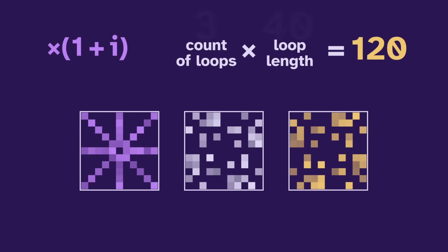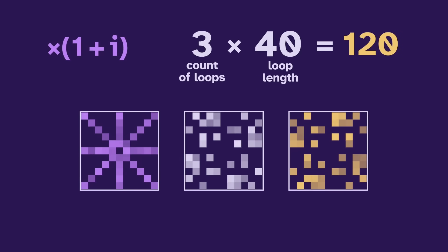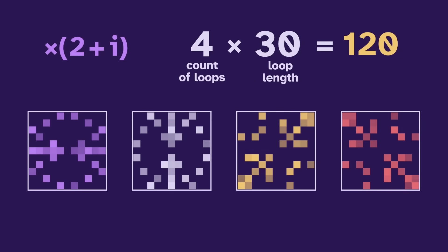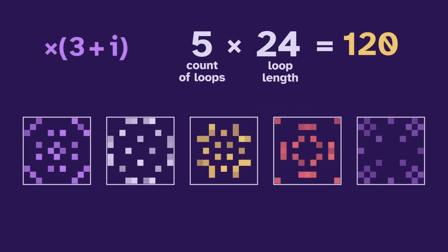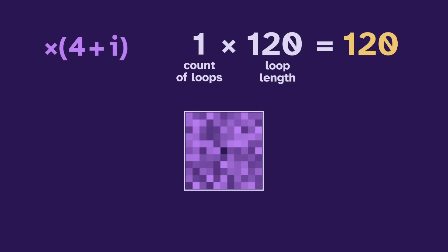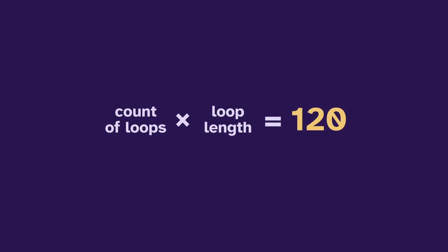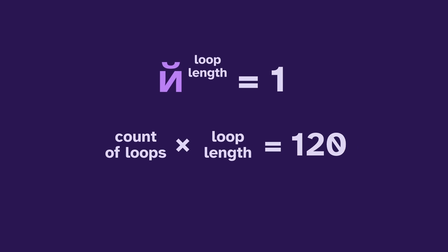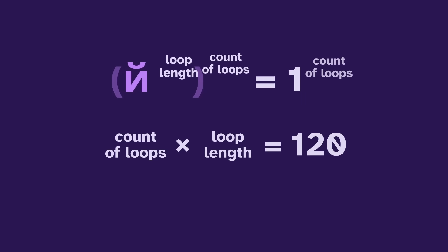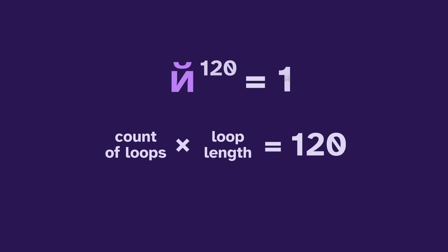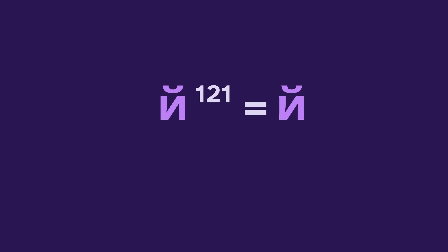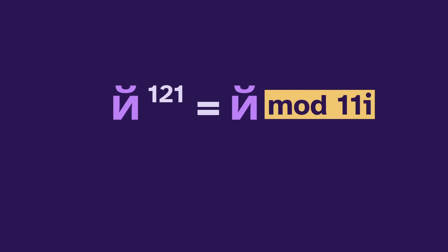Multiplying by 1 plus i gives us 3 loops of length 40. With 2 plus i, we have 4 loops of length 30. With 3 plus i, we have 5 loops of length 24. And with 4 plus i, we have just 1 loop of length 120. This equation is always true, so any a to its loop length is 1, and we can raise to the count of loops and get our result — but this is specific to mod 11i.